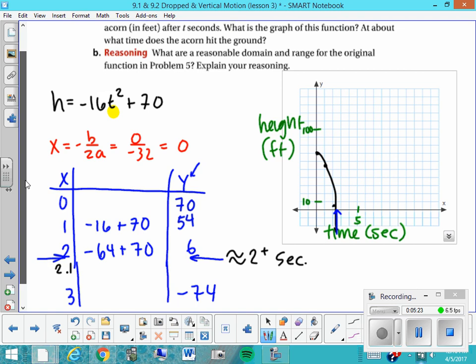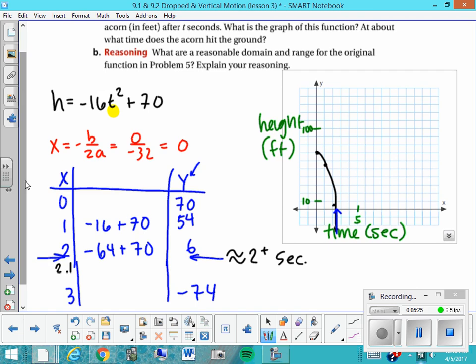So then it says, what are the reasonable domain and range for this? And so the domain is usually all real numbers. But since we're talking about time as the set of x values, then our domain is going to be all real numbers x is greater than or equal to 0. And our range for this problem, although I asked about the original one, is going to be all real numbers y is less than or equal to 70, because that's where the acorn started.